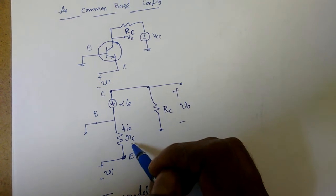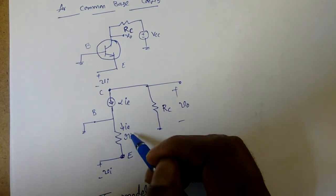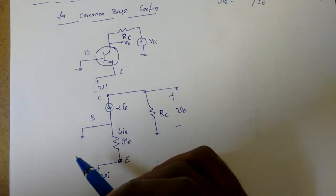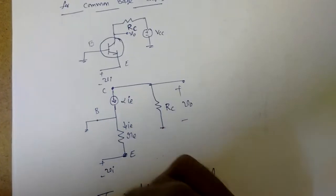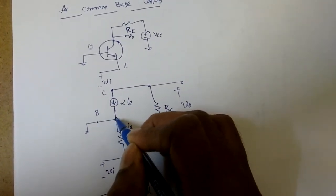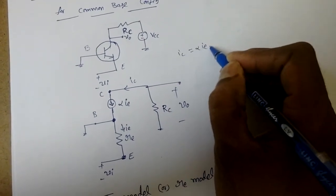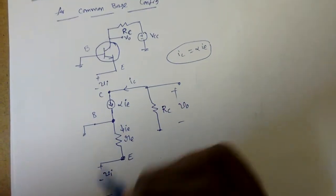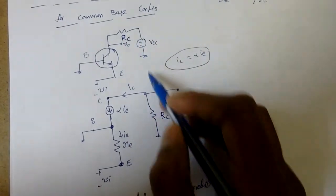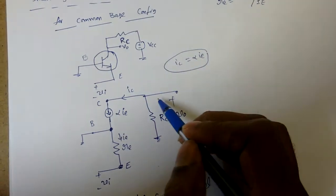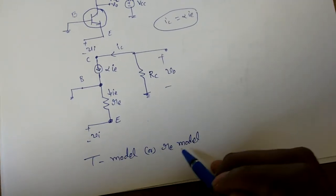If we see the previous lecture's pi model, this r was represented as r_pi in the common emitter configuration. Now, since input is applied at the emitter, there is an emitter current. At the output side, the collector current i_c equals alpha times i_e. For AC analysis, DC sources are grounded, so r_c becomes grounded. Taking the output in this way, the circuit looks like the letter T — so it is called the T model or r_e model.